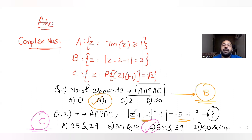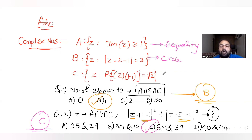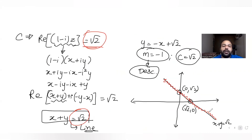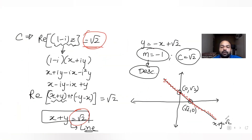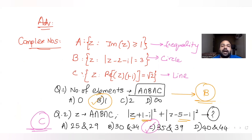So the two correct answers are option B (one element) and option C (value equals 36). To summarize: the first region was an inequality giving the half-plane above y = 1; the second was a circle with points on its circumference; the third was a line with infinite points. The common region gave only one point. We then found the sum of squared distances using the Pythagorean theorem on the diameter. I hope you understood — see you tomorrow with another JEE Advanced question!